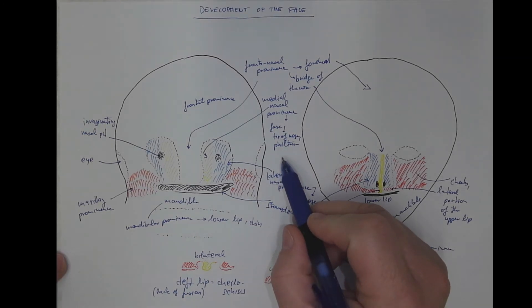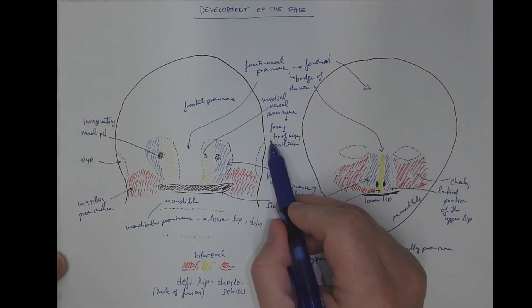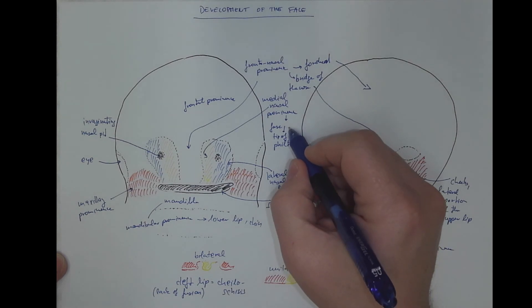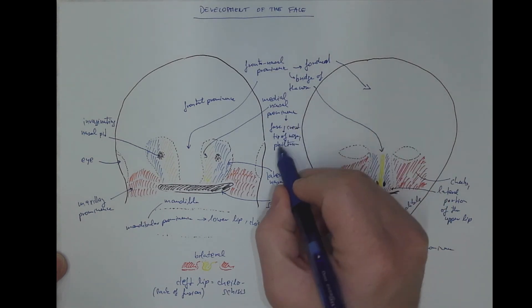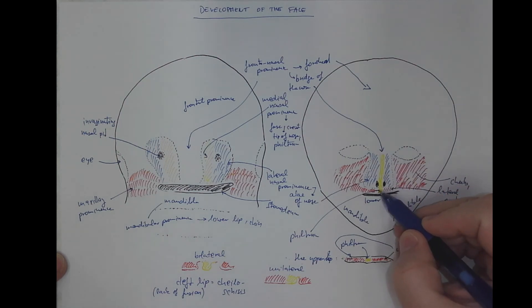One more thing. The medial nasal prominence, as seen from the picture, gives rise also to the crest of the nose. So not only tip, but also the crest of the nose. Tip of the nose and philtrum is correct.